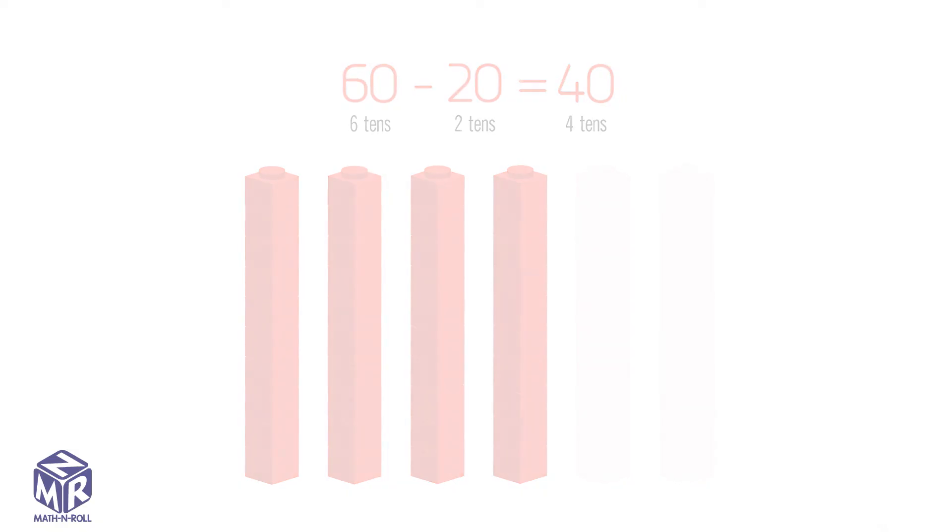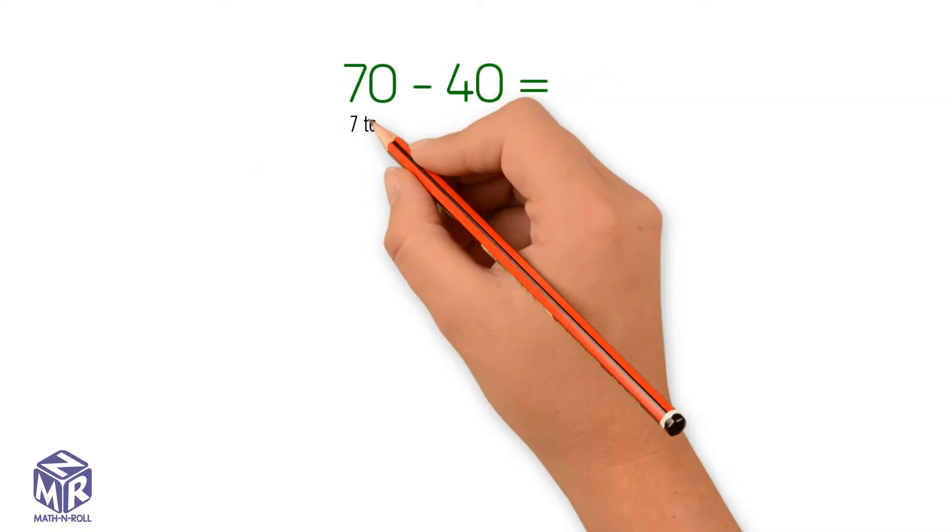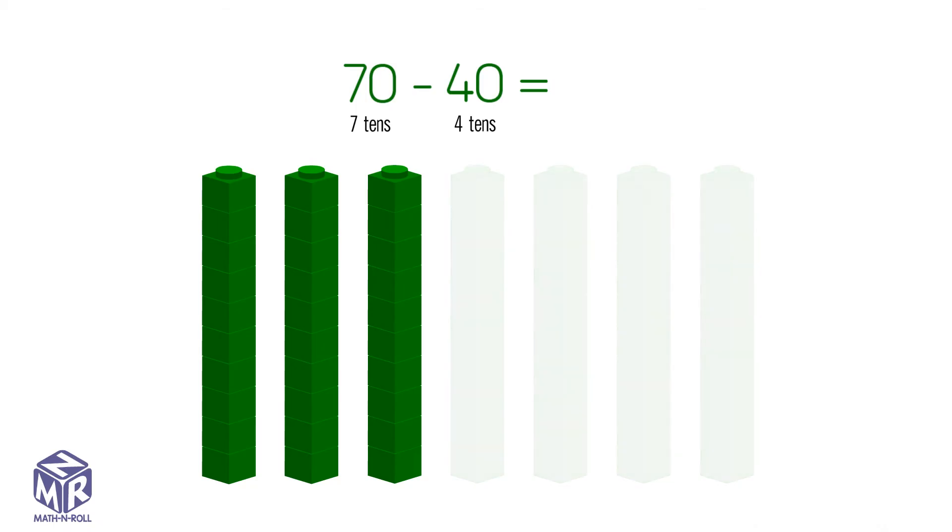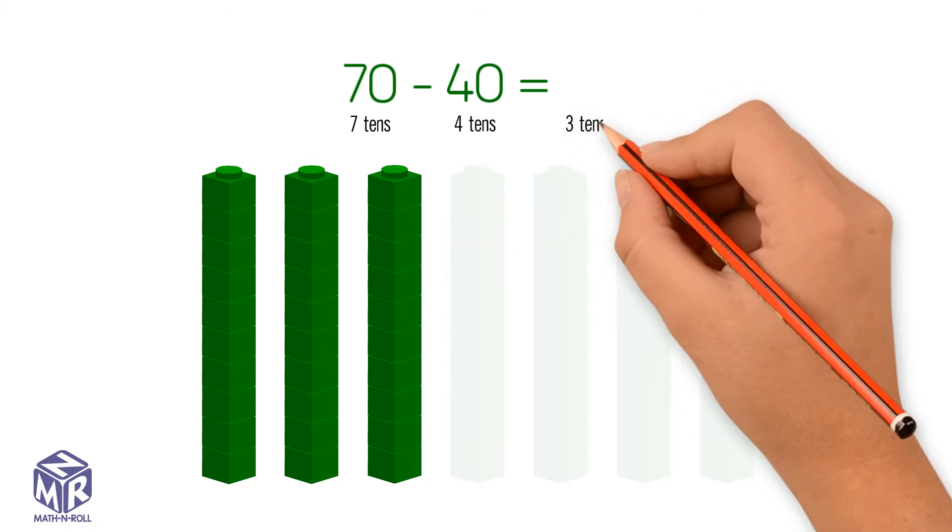Let's try another example, 70 minus 40. 70 has 7 tens and 40 has 4 tens. Subtract the tens. We get 3 tens or 30.